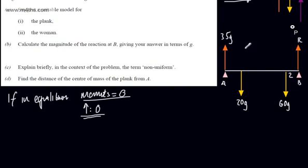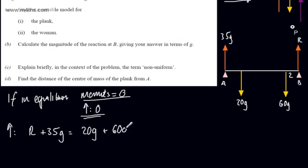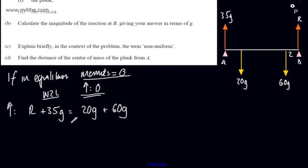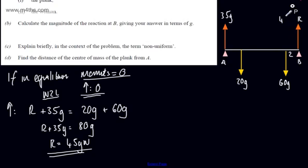We need to solve R. We've got one unknown, therefore we need one equation, and we're simply going to resolve upwards. So resolving upwards: R plus 35G equals 20G plus 60G. You can say R plus 35G minus 20G minus 60G equals zero — F equals MA with zero resultant. I prefer to set the vertical forces equal, those acting up and those acting down. So R plus 35G equals 80G. Subtracting 35G from both sides: R equals 45G Newtons.